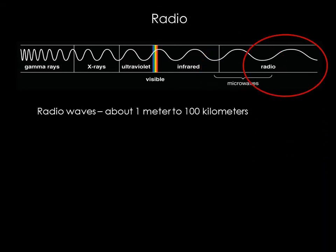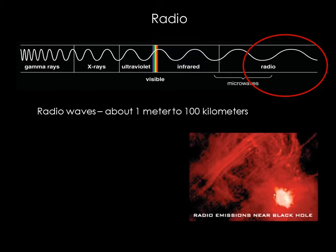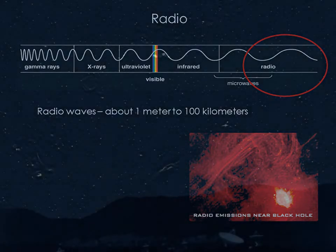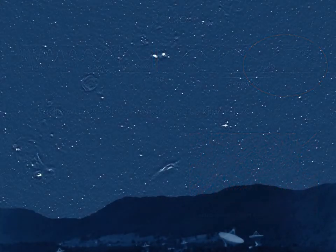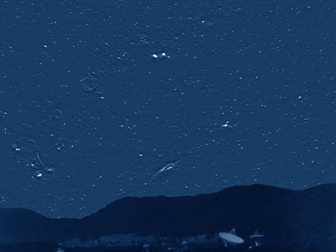Radio waves have the longest wavelengths in the electromagnetic spectrum. There are plenty of astronomical objects that emit radio light. If you were to look at the sky with a radio telescope, it would appear very different from what you see in visible light. Instead of seeing point-like stars, you would see distant pulsars, star-forming regions, and supernova remnants.